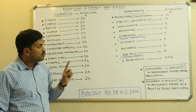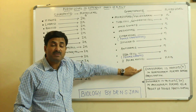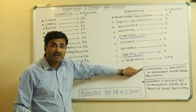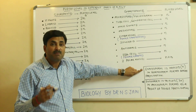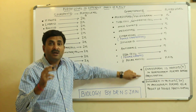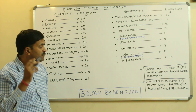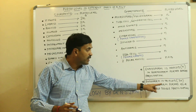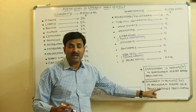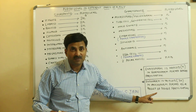One more thing you must know: in the case of gymnosperms, the endosperm is haploid because it is formed before fertilization. But in the case of angiosperms, the endosperm is triploid — that is 3N — and it is formed after fertilization as a product of double fertilization.